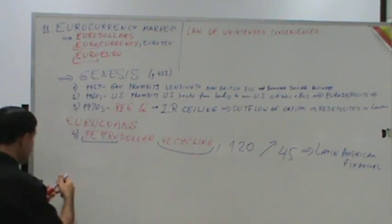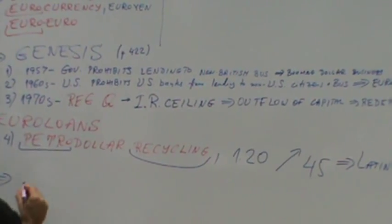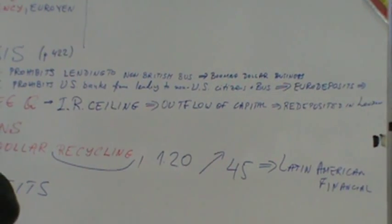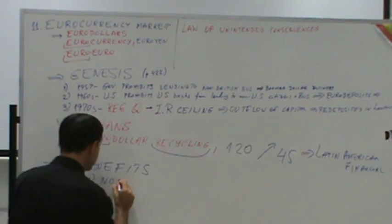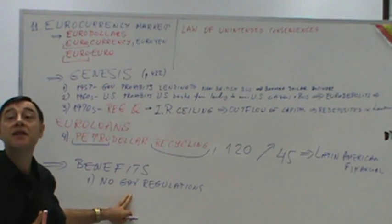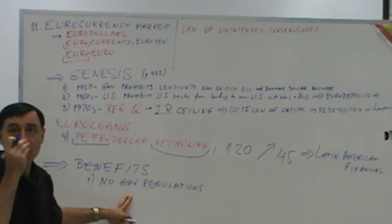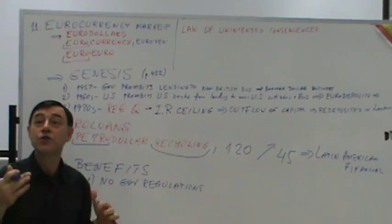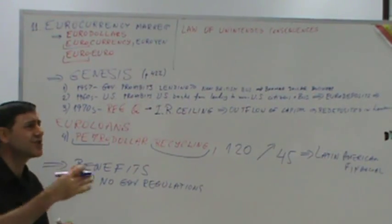Now the attractions of the euro currency market. Why do bankers love it? Number one: no government regulations. It's basically an unregulated market. If you're a bank, you can do whatever you want with these euro-dollars — lend, whatever. No interest rate ceilings, no interest rate floors, no amount limitations. Businesses also love it: no regulatory requirements, no filings, simpler and more convenient. It's a whole lot easier and, of course, more profitable.